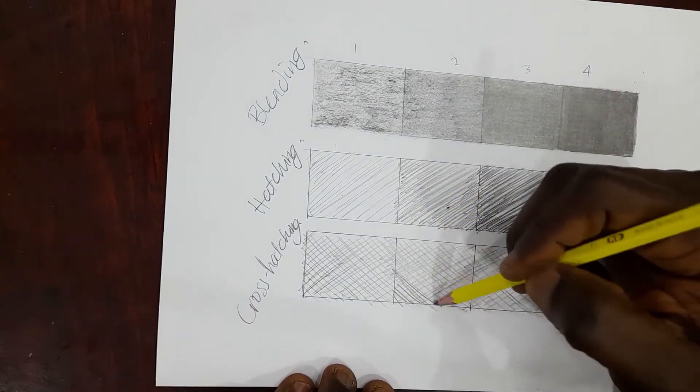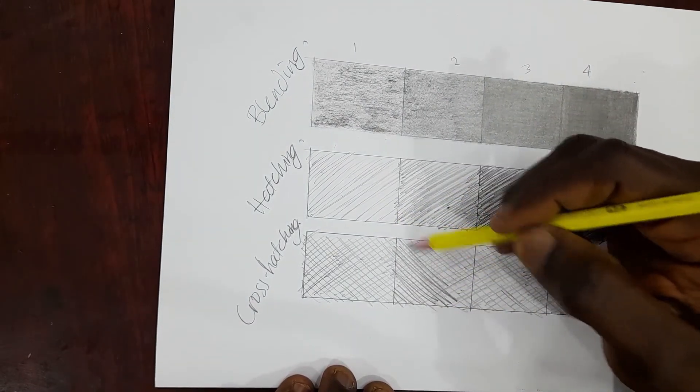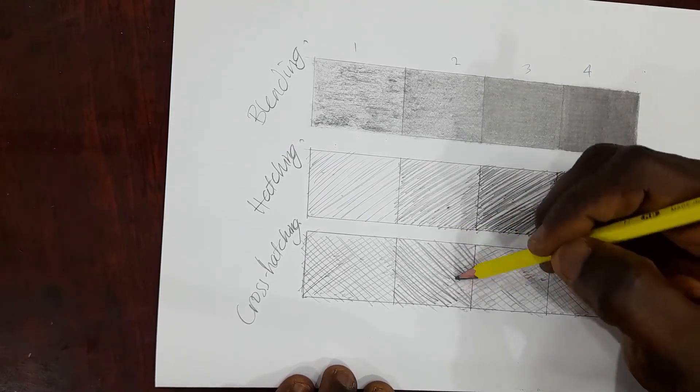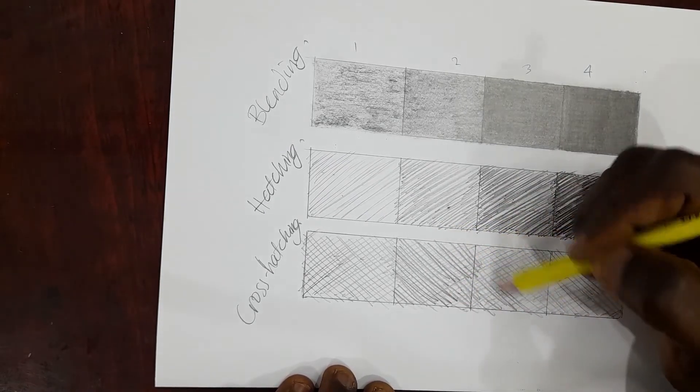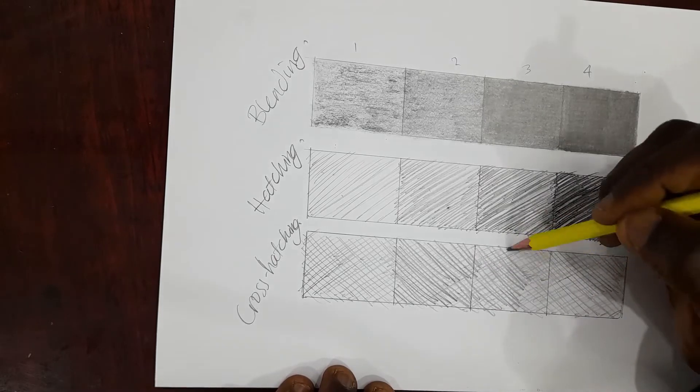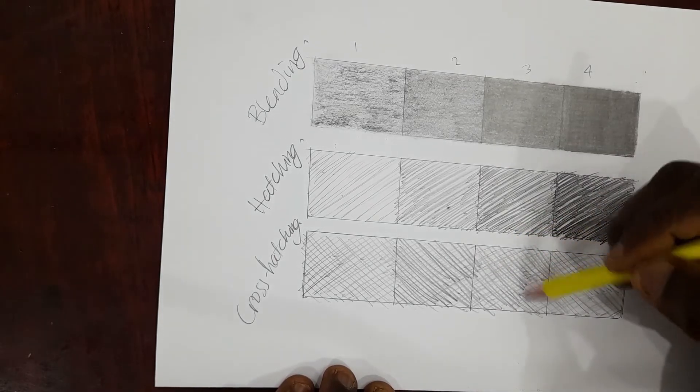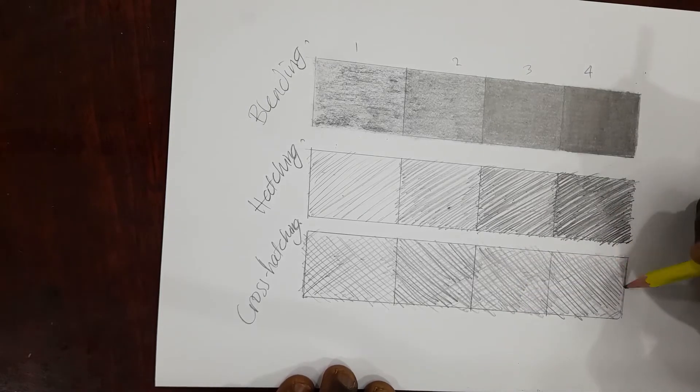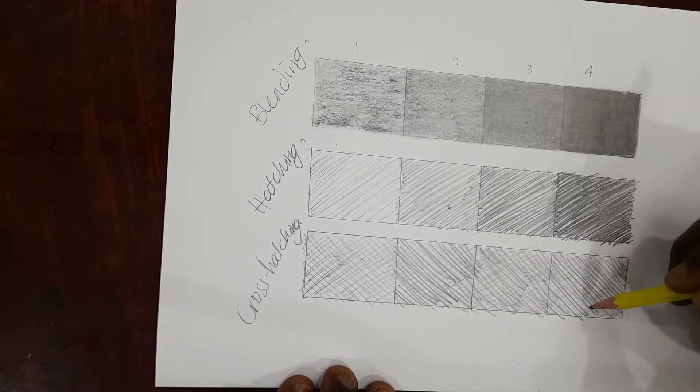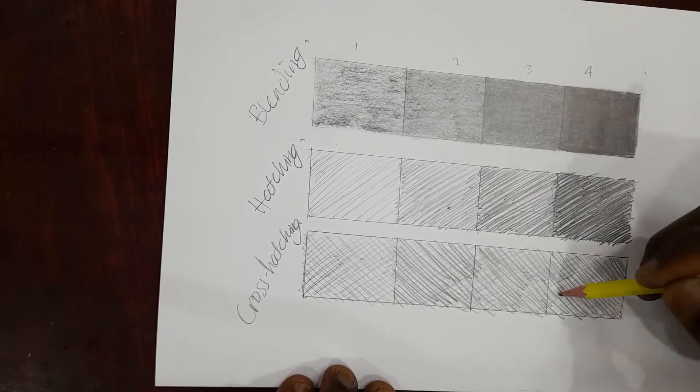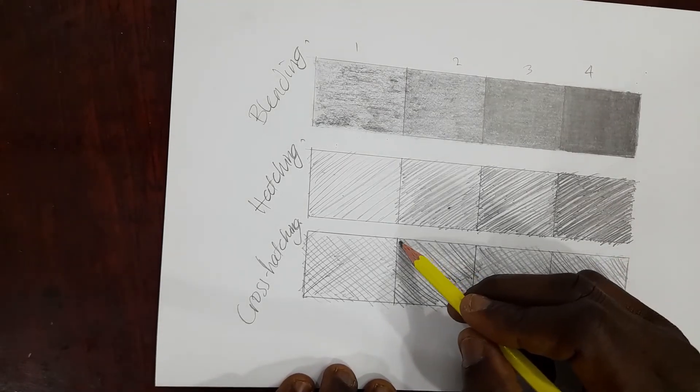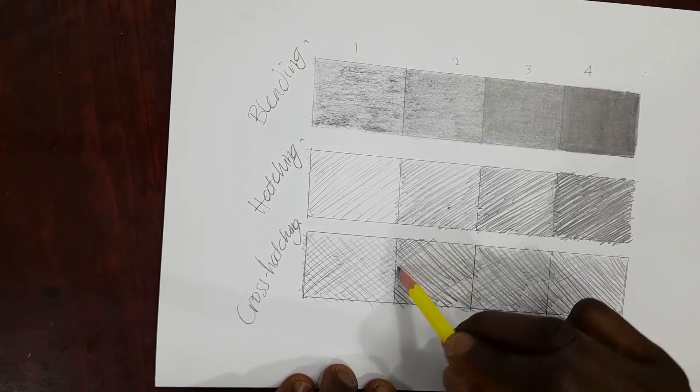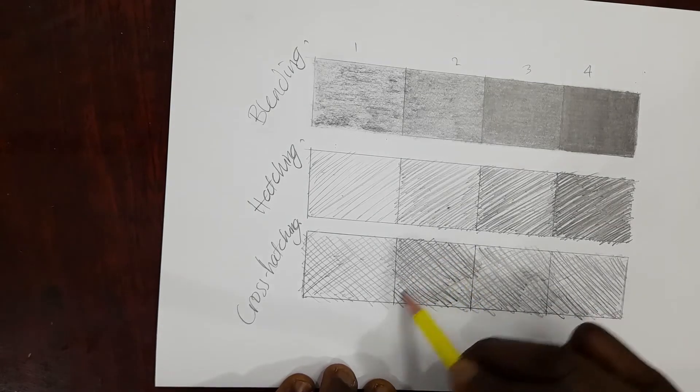So I'm adding more lines, more layers and slightly darker than before. Just as the previous ones, the more layers of lines you add, the darker the space will look.